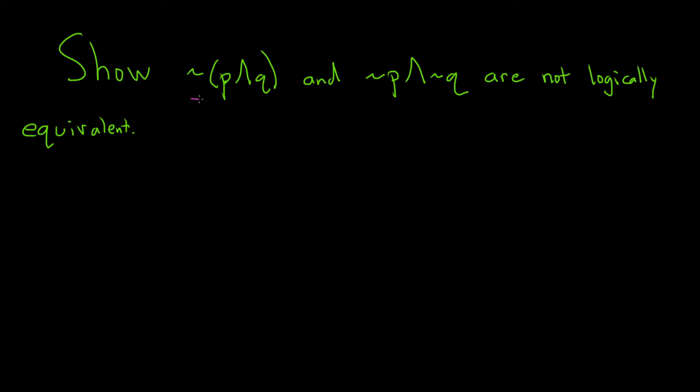In this problem we're going to show that ~(p∧q) and ~p∧~q are not logically equivalent. To do that we're going to use truth tables.